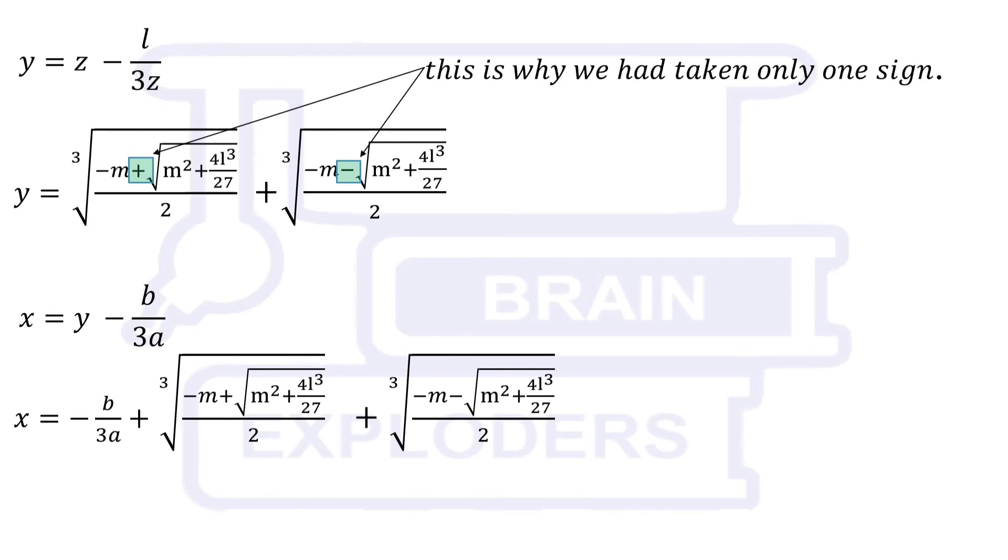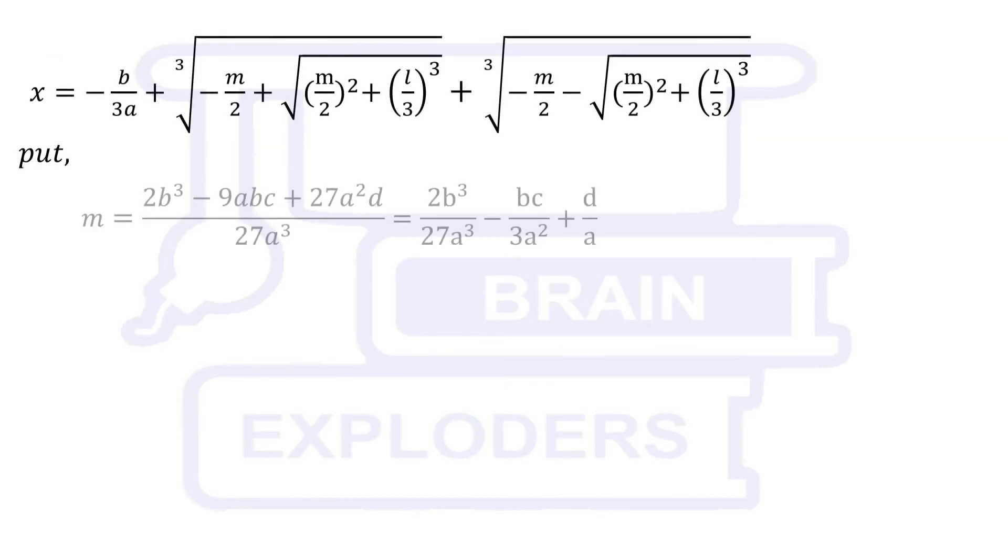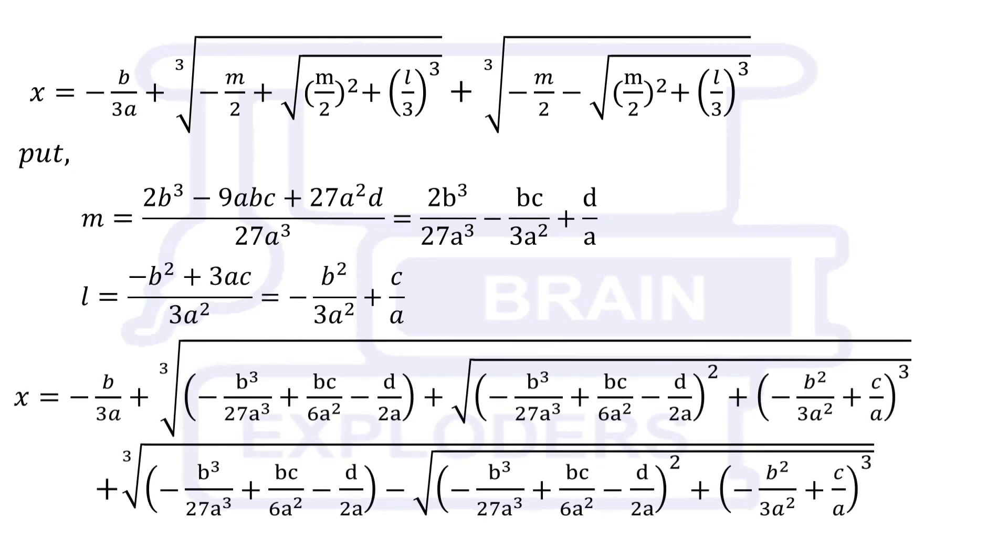Now, we have almost reached. We get one root of our cubic equation from assumption x equals to y minus b over 3a and by substituting the values of l and m. Since it is a cubic equation, therefore, it must have three roots.